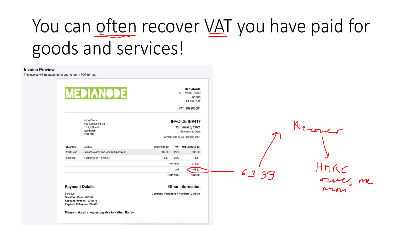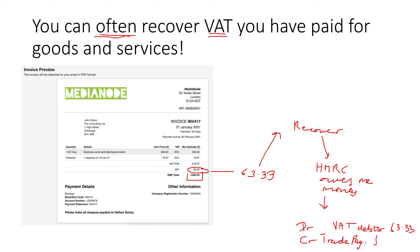That means we recognise a debtor - we record a debtor. So we say VAT debtor, which in this case is going to be £63.33, and we debit it because debit equals debtor. The credit goes to trade payables - you put the full amount, so the gross amount is £380, and we put £380 to trade payables.